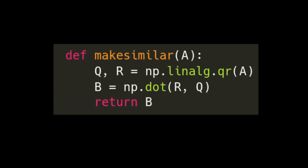And so with some code, we're going to make use of this make similar function that I've created here a lot. We're just going to use the numpy linalg qr function to compute a QR matrix decomposition for some given A matrix, and then we're just going to compute the matrix product RQ and then return that similar matrix.